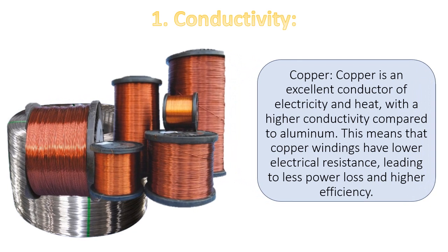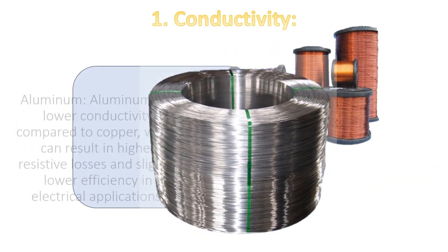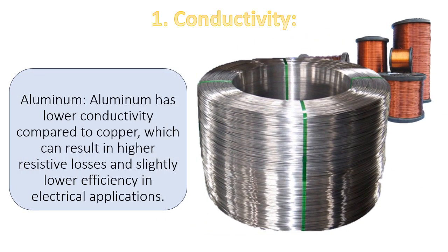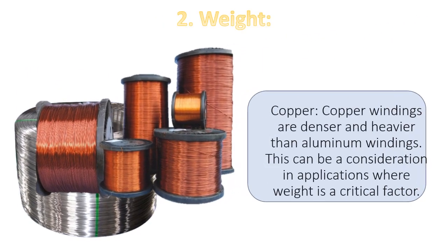1. Conductivity. Copper is an excellent conductor of electricity and heat with higher conductivity compared to aluminum. This means that copper windings have lower electrical resistance, leading to less power loss and higher efficiency. Aluminum has lower conductivity compared to copper, which can result in higher resistive losses and slightly lower efficiency in electrical applications.